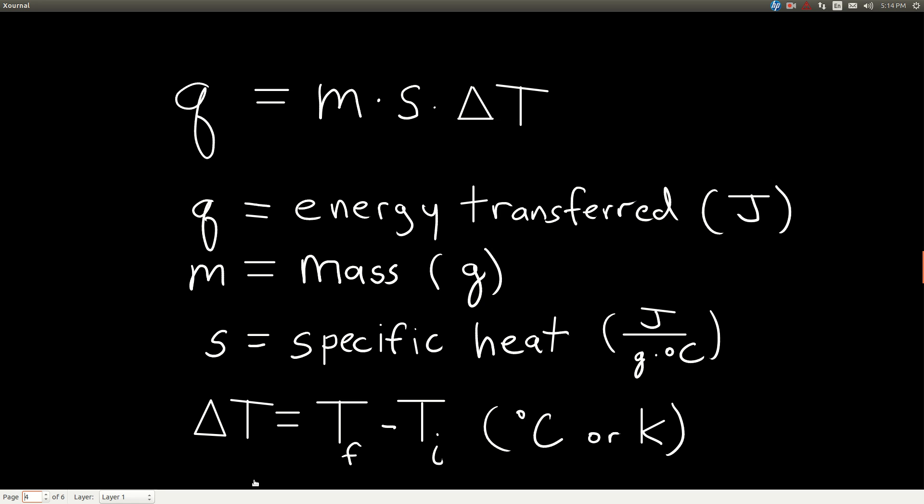One way we can use the specific heat capacity of a substance is with this equation here. Memorize this equation: Q is equal to m times s times delta T. Q is how much energy is transferred into or out of a substance. M is the mass of that substance in grams. Units of energy are joules. The capital J stands for joules, and that's the unit that we use for energy.